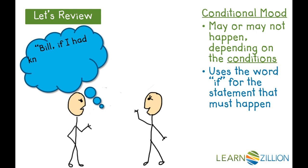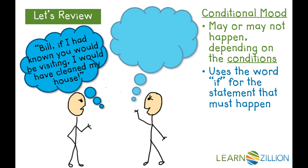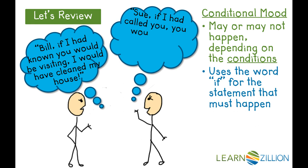For example, in the statement: "Bill, if I had known you would be visiting, I would have cleaned my house" — Sue needed to know that Bill was visiting; this had to happen in order for Sue to clean her house. As a second example: "Sue, if I had called you, you would have known that I would be visiting." Bill needed to call Sue in order for her to know the visit was going to happen. The phone call was the condition that needed to be true. Since Bill didn't call, Sue didn't know about the visit, and Sue's house didn't get cleaned.